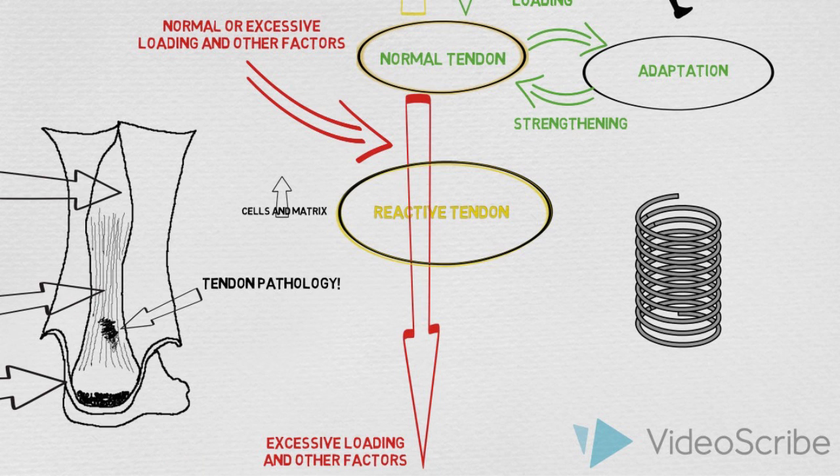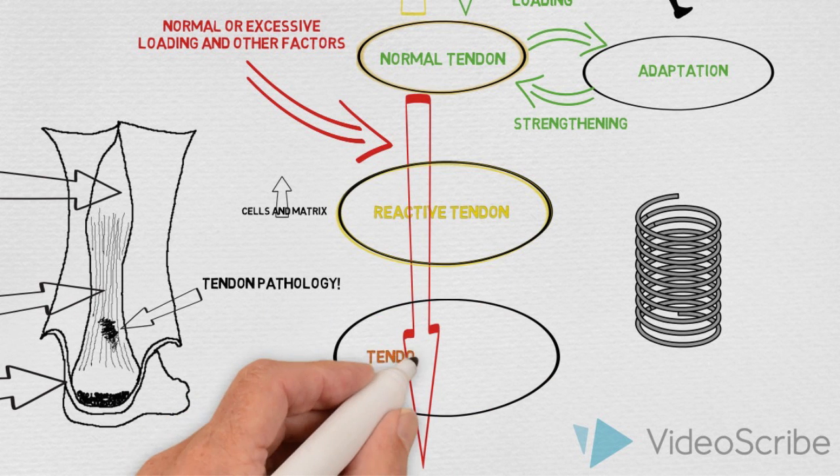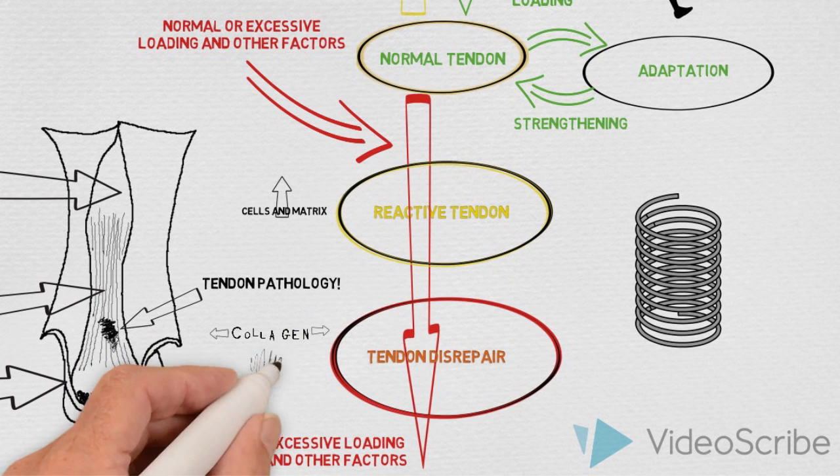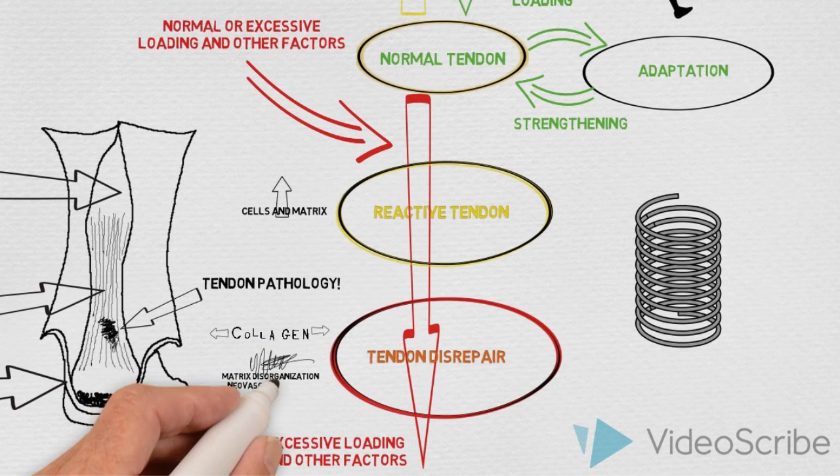If the load continues to be excessive, we then move along the continuum to a tendon in disrepair. Here the tendon continues to try and thicken to protect itself, but as this occurs we start to see separation of collagen fibers and disorganization of the cell matrix. We also see new blood vessels and nerves which may account for some of the ongoing pain.